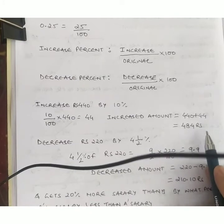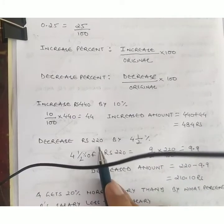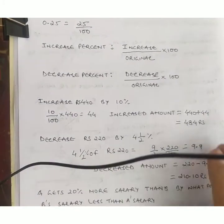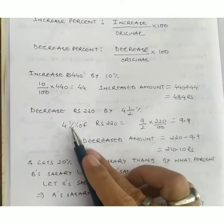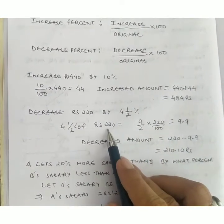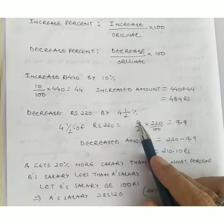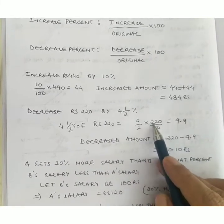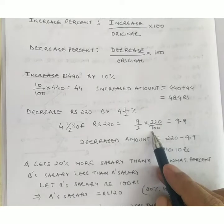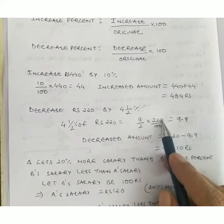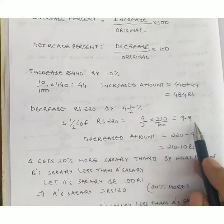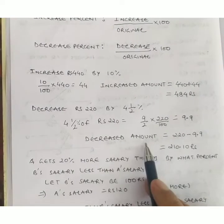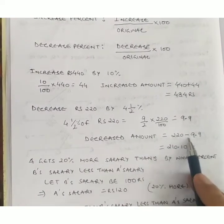Now suppose we decrease Rs.220 by 4½%. 4½% of Rs.220 equals 9 upon 2 into 220 upon 100. When you divide 220 by 2 and by 100, you get 9.9. The decreased amount equals 220 minus 9.9, which equals Rs.210.10.